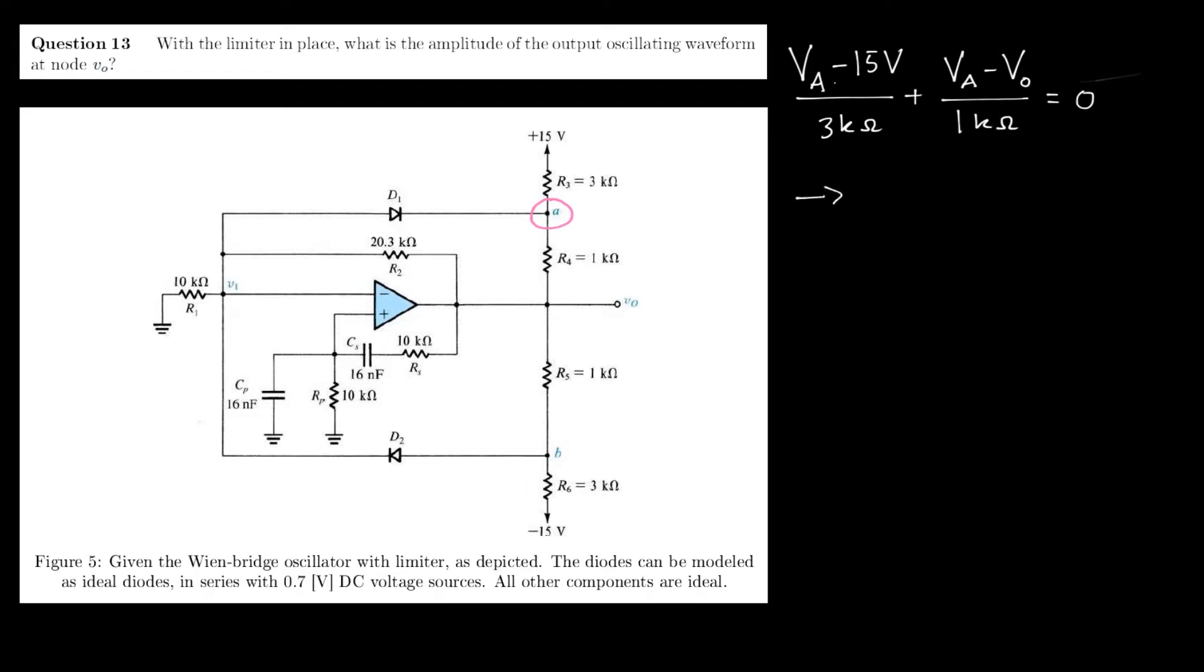And that can be rewritten to give us VA in terms of VO as follows. VA is 15 over 4 plus 3 fourths of VO.